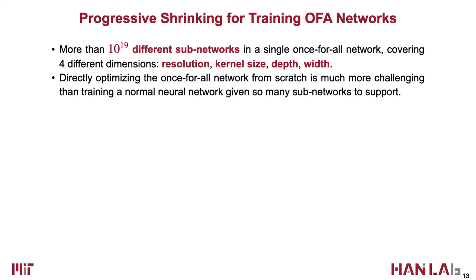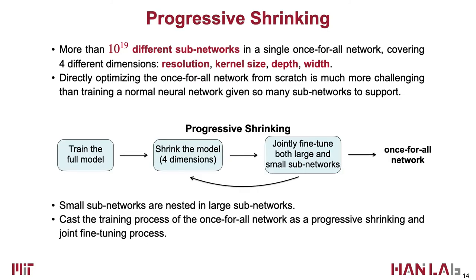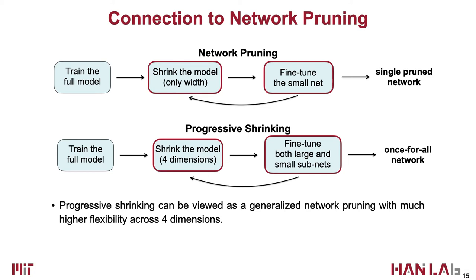Given so many subnetworks to support, it becomes much more challenging to optimize compared to training a normal network. Hence, we introduce the progressive shrinking technique. We cast the training process of Once-for-All as a progressive shrinking and joint fine-tuning process. We start with training the full model, then progressively shrink the network to support smaller subnetworks, while jointly fine-tuning both large and small subnetworks to avoid forgetting. Progressive shrinking can be viewed as a generalized pruning process that has much higher flexibility — it not only shrinks the width but also the depth, kernel size, and resolution. Besides, it produces a much more powerful Once-for-All network that can fit different hardware, rather than a single pruned network.